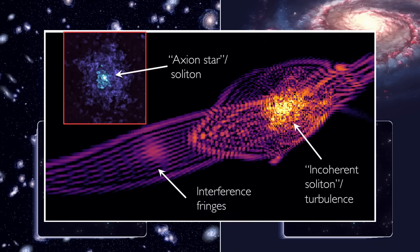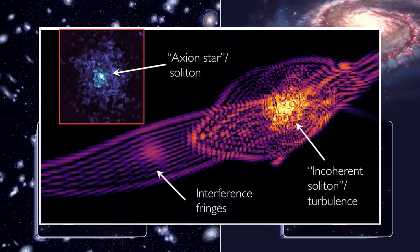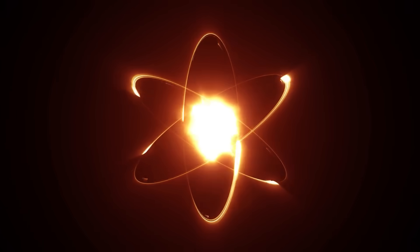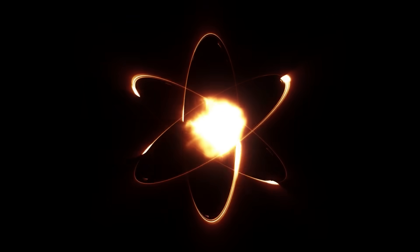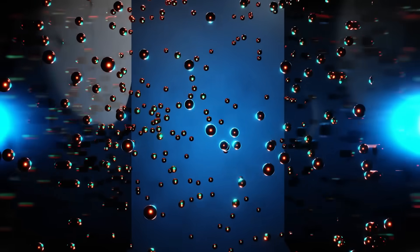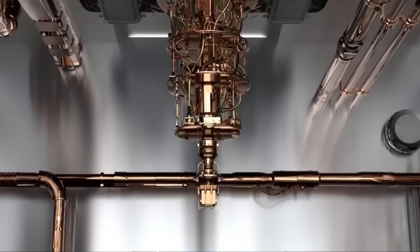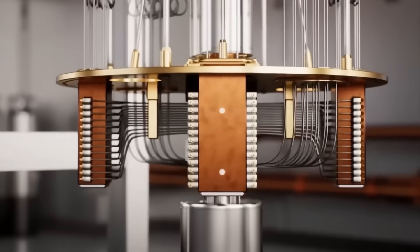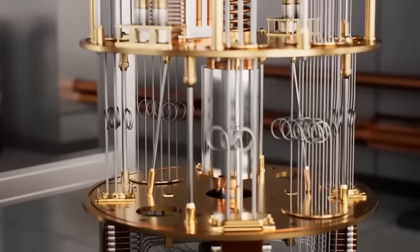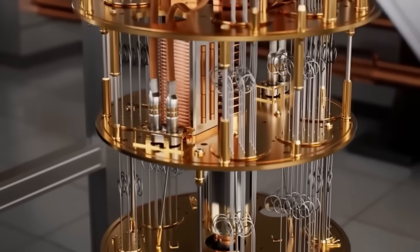If this is true, then axions may not just be a missing piece of dark matter, they could be deeply woven into the very fabric of quantum mechanics itself. This raises an even bigger question. Are quantum computers simply detecting axions, or are they unintentionally interacting with them in ways we don't yet understand?